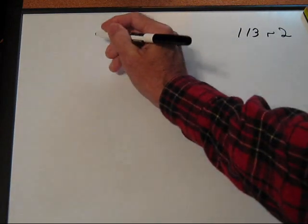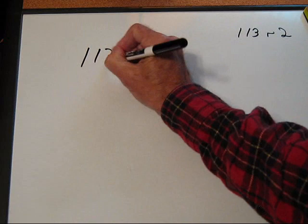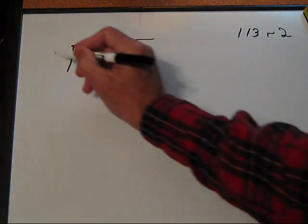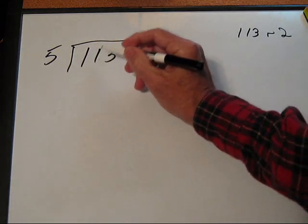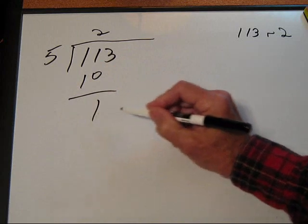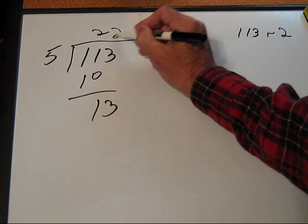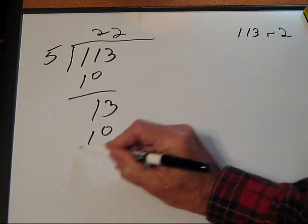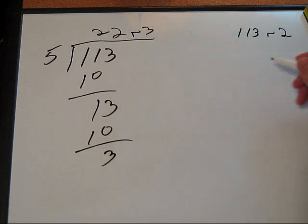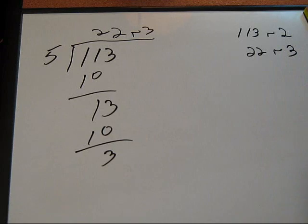Now, we're going to take our quotient, which you remember, you can see right there. It's 113. And we're going to divide again by 5. 5 goes into 11, 2. Gives us a 1. We drop down a 3. 5 goes into 13, 2. Remainder 3. And now we write over here. 22, remainder 3.